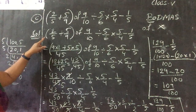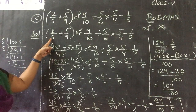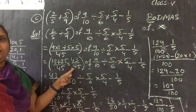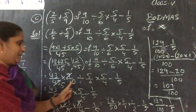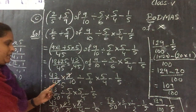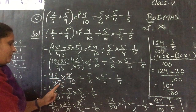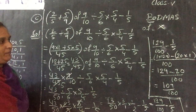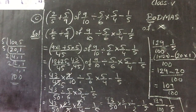Recap: first take LCM for the bracket, divide LCM by denominator, multiply result with numerator to get 43/45. 'Of' means multiplication: 9/10 × 43/45. After cross-multiplication, 9÷45=1/5, giving 43/50. Then do division as reciprocal, simplify, and subtract 1/5 using LCM to get the final answer. Sums C, D, E, and F are homework.